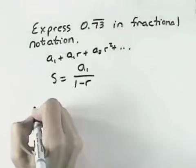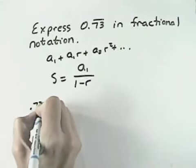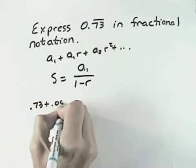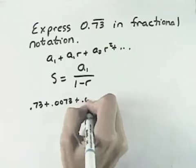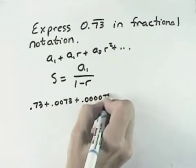So here we have 0.73 repeating. That means we have 0.73 plus 0.0073 plus 0.000073, etc.